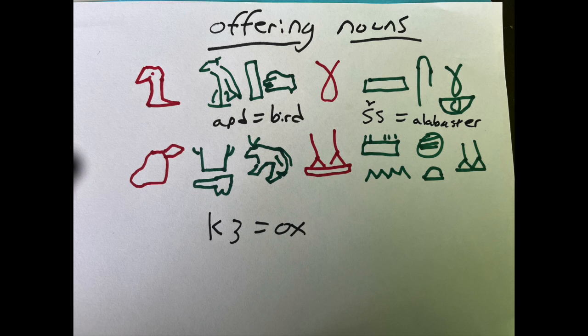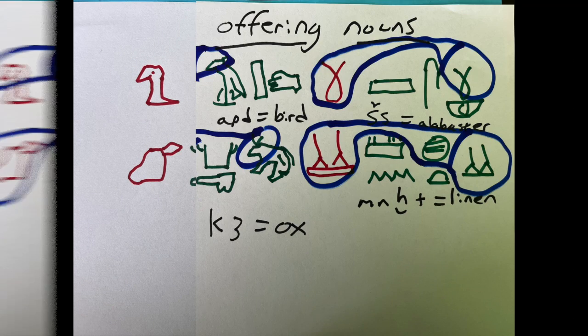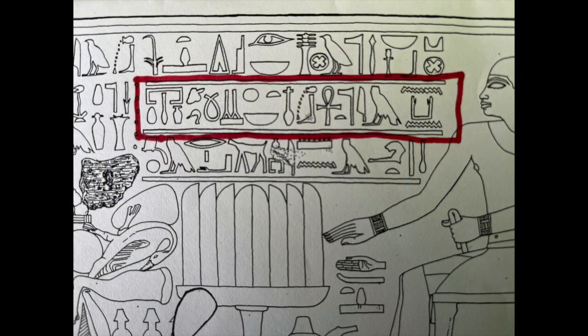That first one there is aped, bird, but it can be abbreviated with just a bird's head, especially in the offering formula. Then we have ka, ox, which can be abbreviated just as the head of an ox. Shis, alabaster, and menkhet, linen, both of which also can be abbreviated.